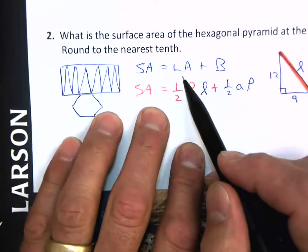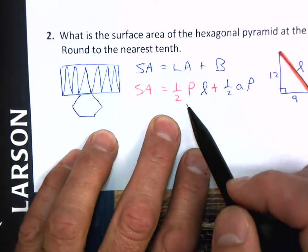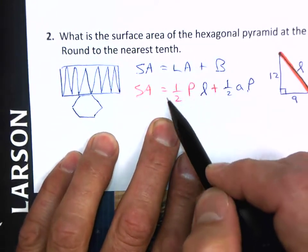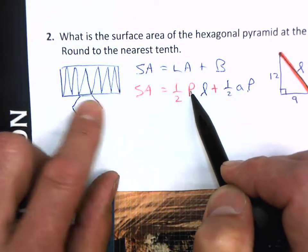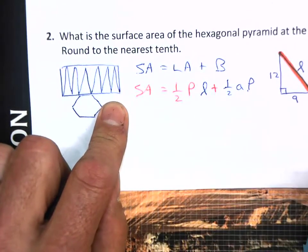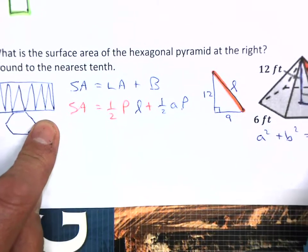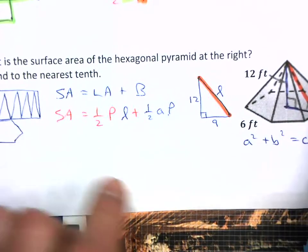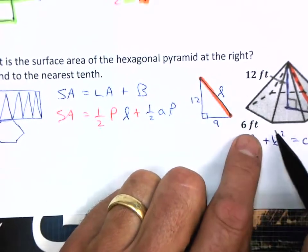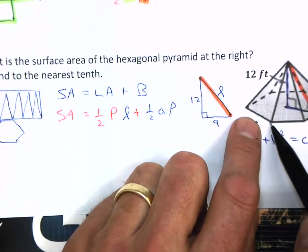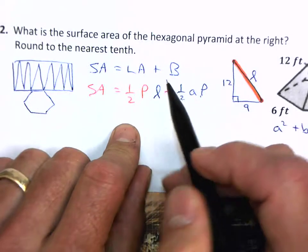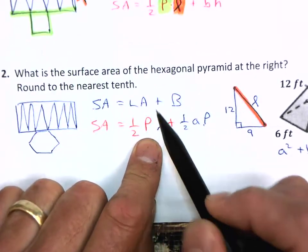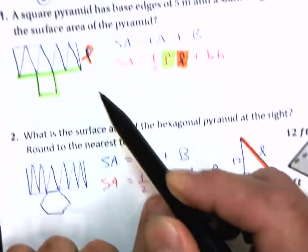For my lateral area, though, it's the same concept. So one-half, because I only want the triangles, times the perimeter. Now, that's the perimeter around your regular polygon here, or hexagon. So each of these are six feet, and there are six sides around there. So I'll let you figure out what the perimeter is. And then times, remember this is your slant height coming up here. So times the slant height.